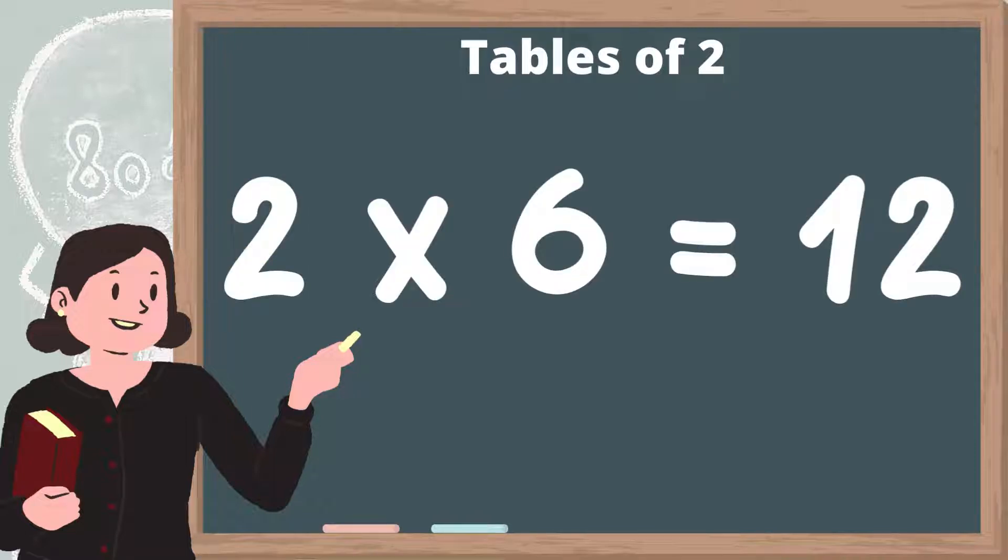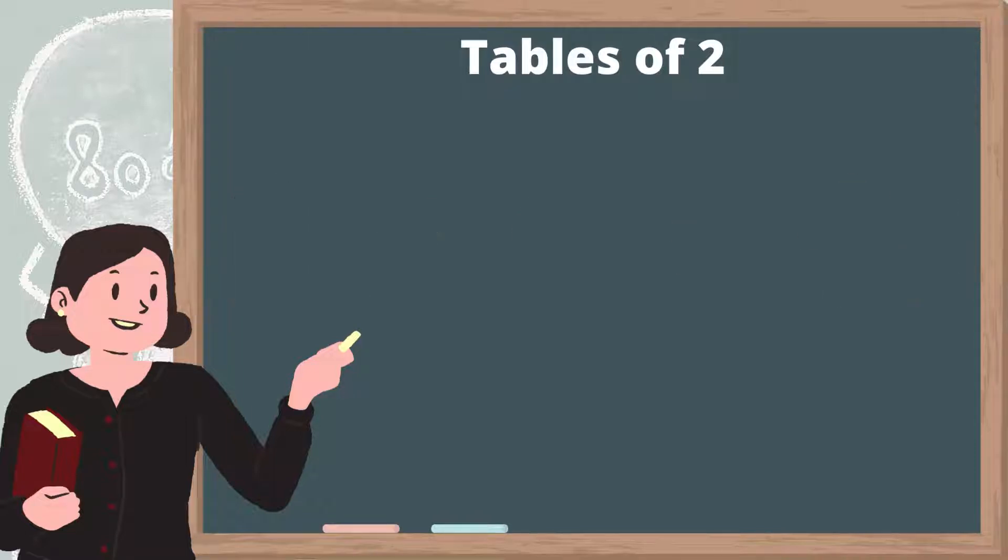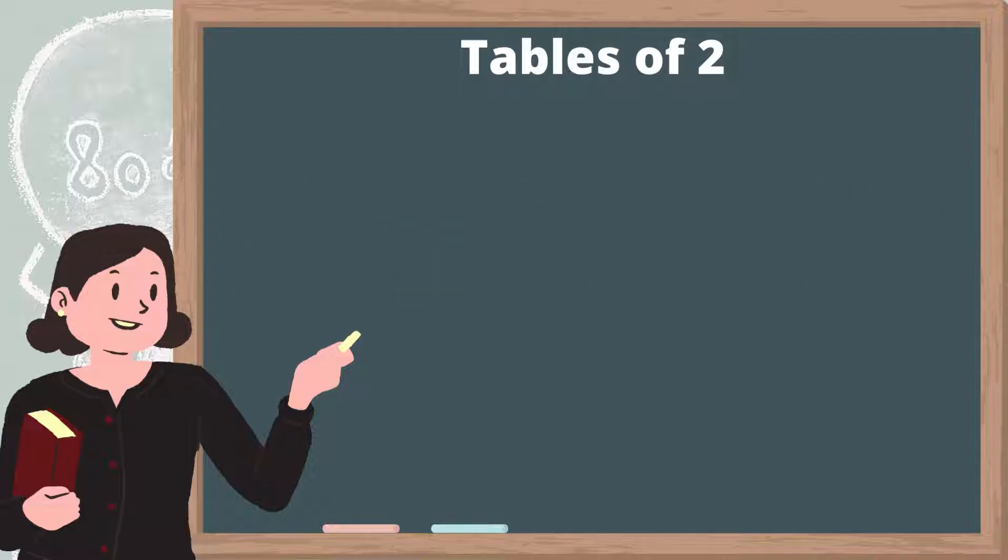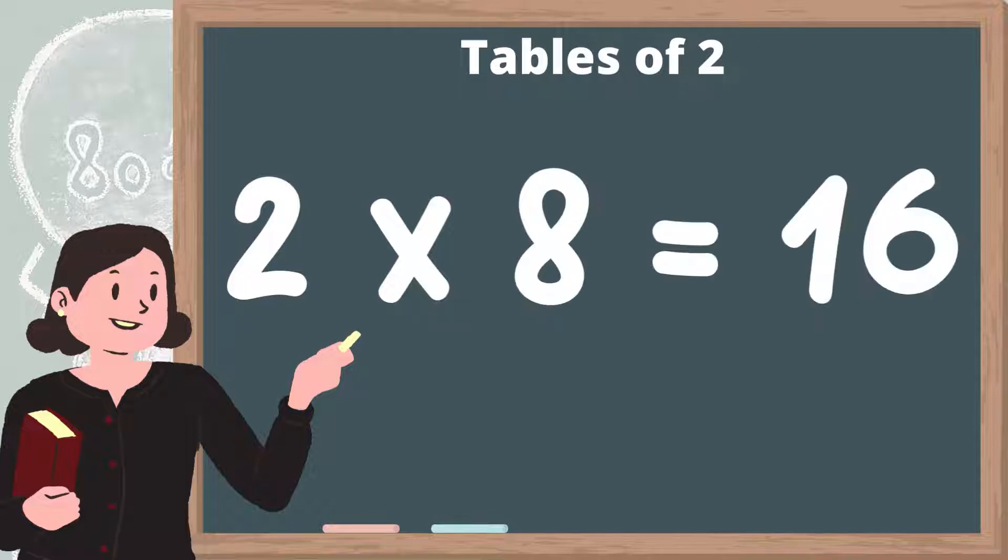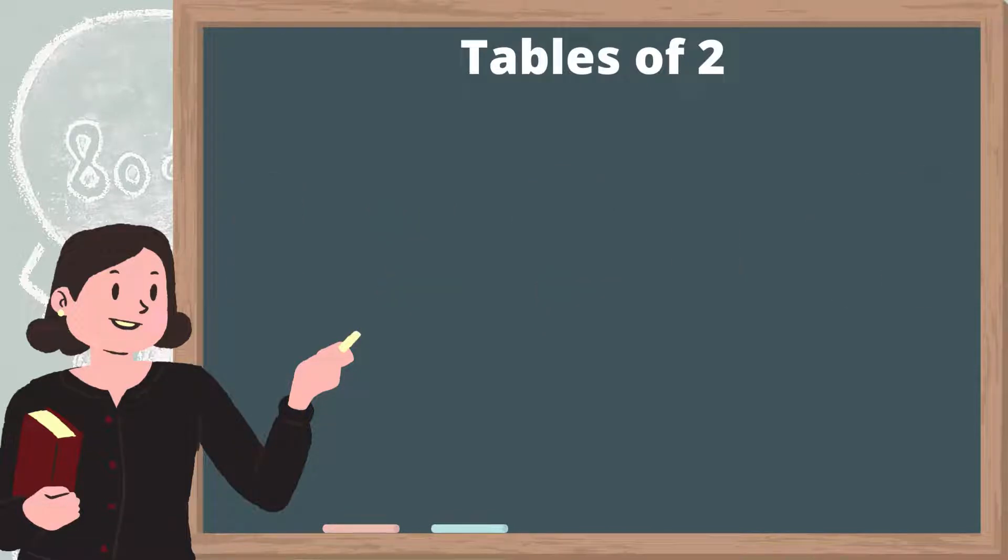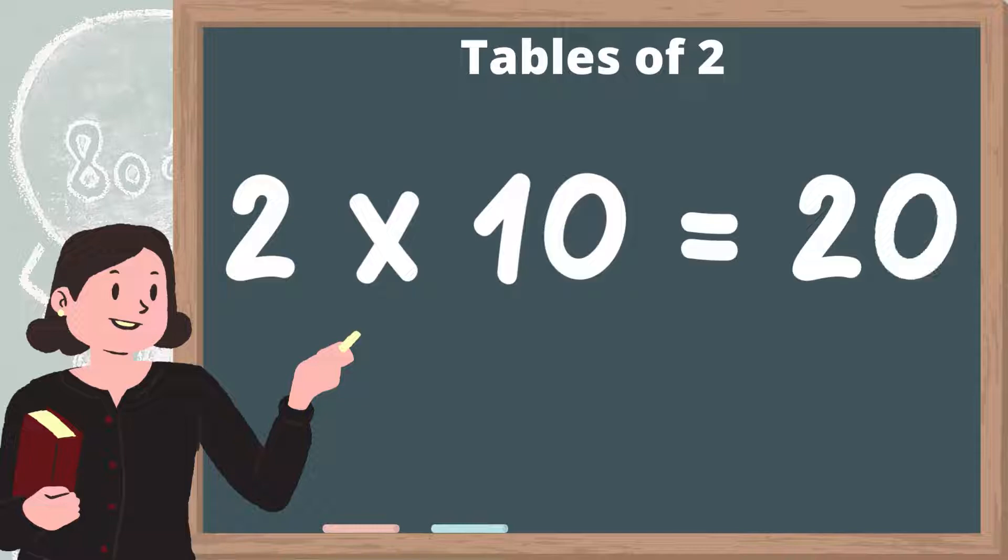Two six are twelve, two sevens are fourteen, two eights are sixteen, two nines are eighteen, two tens are twenty.